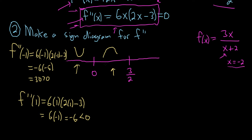And one more, a number bigger than 3 halves. Well, let's see, 3 halves is 1.5, so how about 2? So f double prime of 2, so 6 times 2, and then 2 times 2 minus 3. This will be 12, 4 minus 3 is 1. This is just 12. That's positive, so it's concave up.